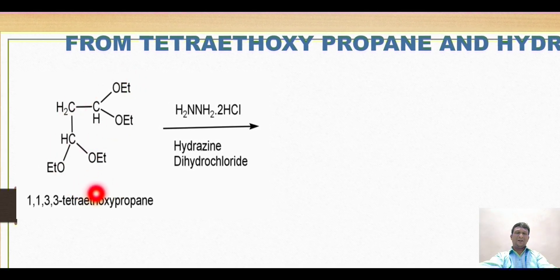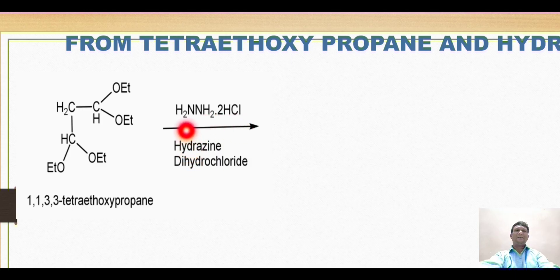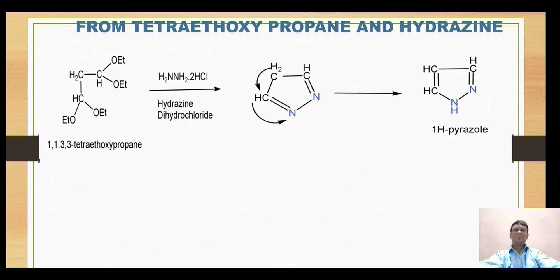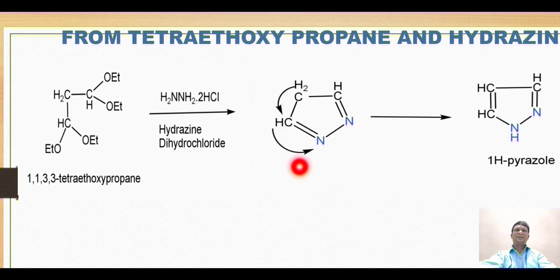The next synthesis is from tetra ethoxy propane and hydrazine. The starting material is 1,1,3,3-tetraethoxypropane, reacted with hydrazine dihydrochloride. The two NH2 hydrogens of hydrazine (NH2-NH2) react with two ethoxy groups, removing two ethanol molecules; similarly, the other two hydrogens react with the remaining two ethoxy groups, liberating two more ethanol molecules. This gives an intermediate with double bonds between each carbon and nitrogen.